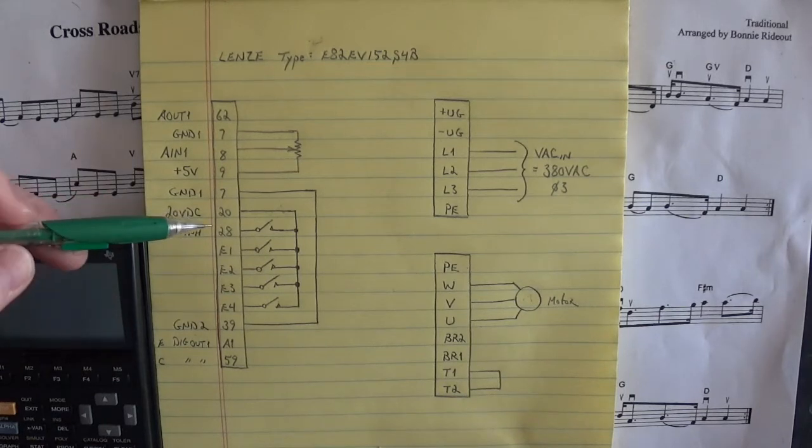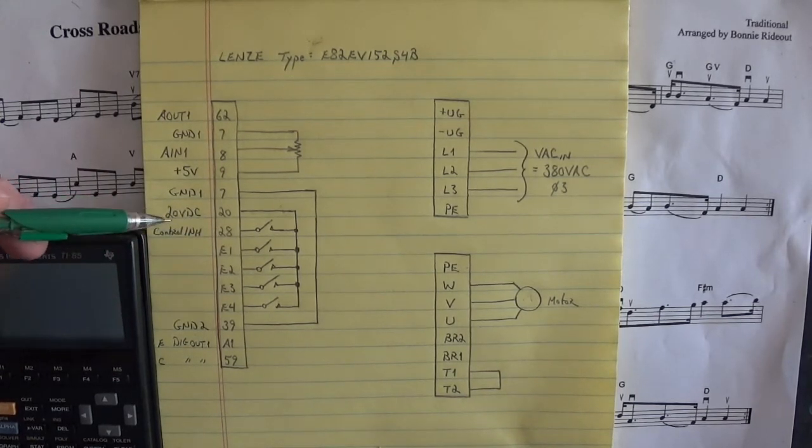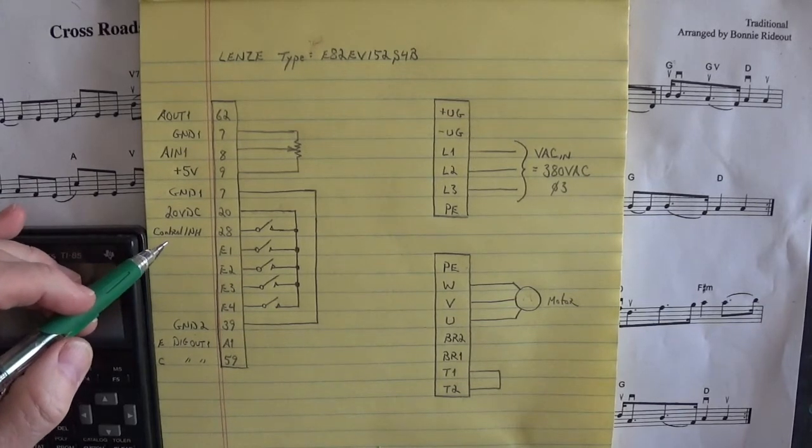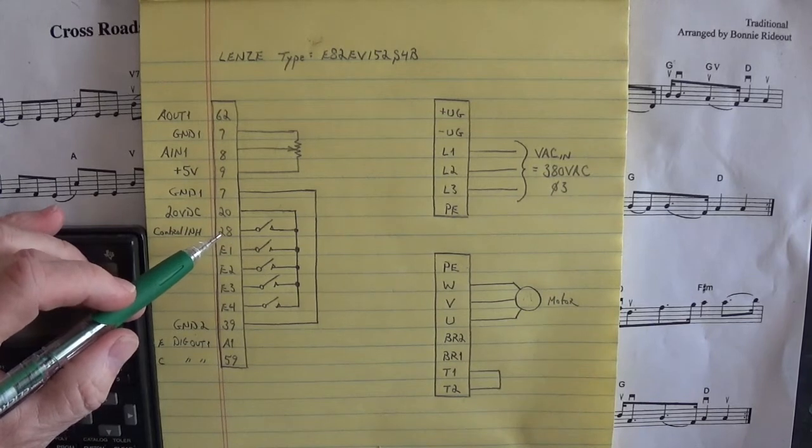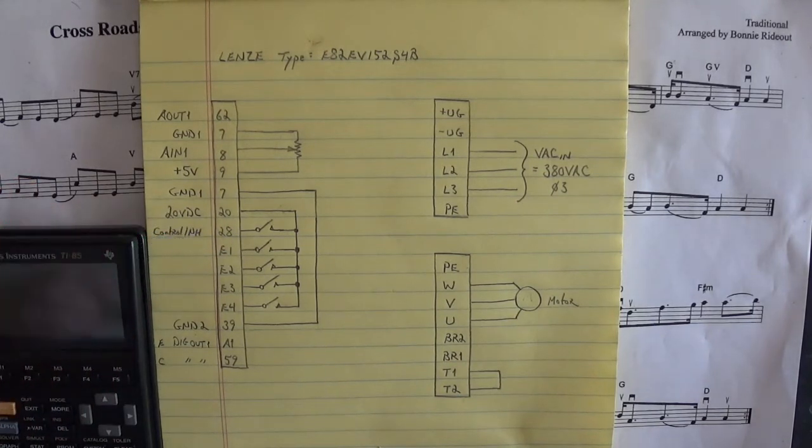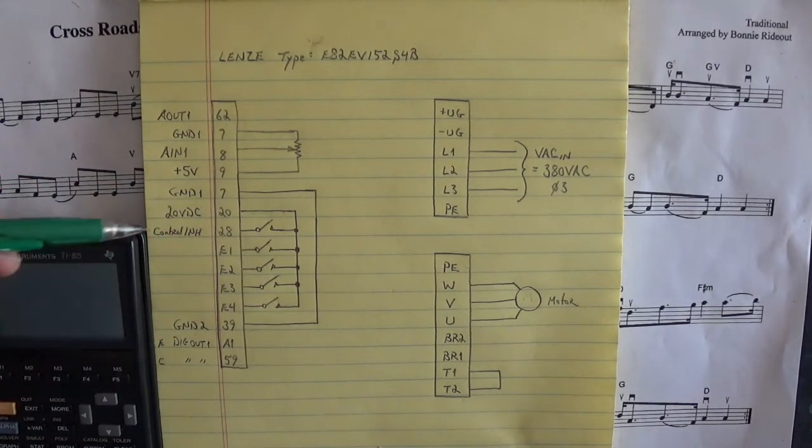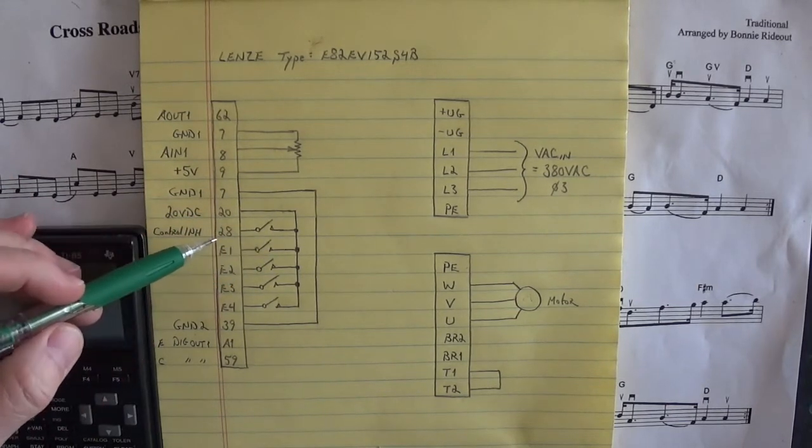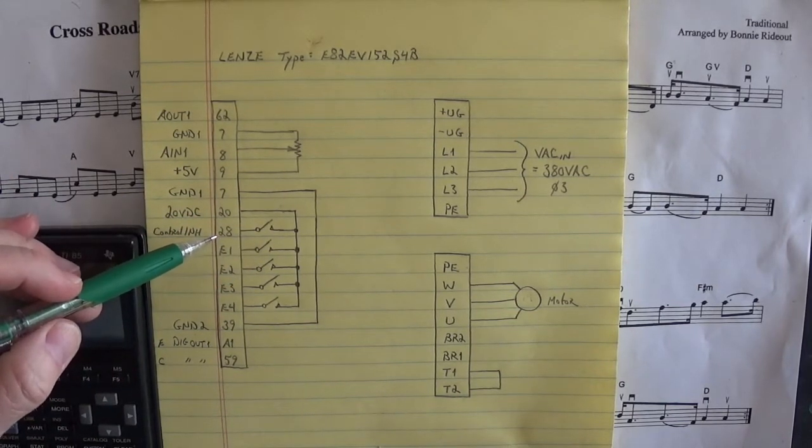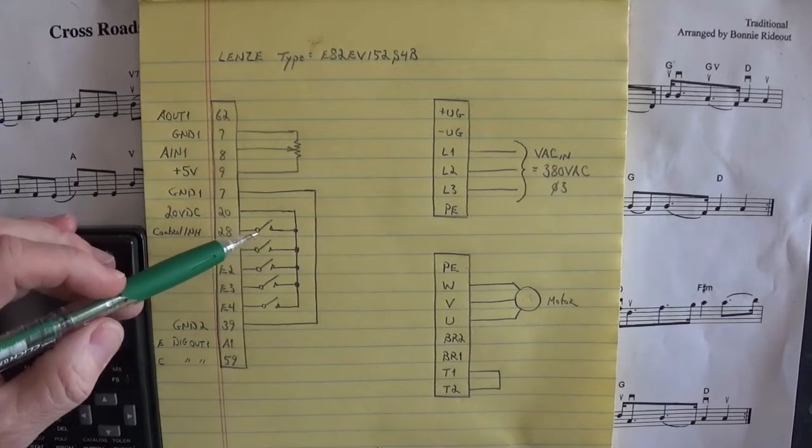Here are the inputs. There's one input that has to be made - that's the control inhibit input. That pulls the drive out of inhibit when you tie pin 20 to pin 28 through this switch right here.